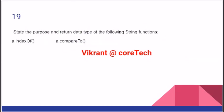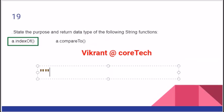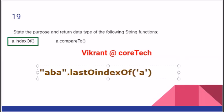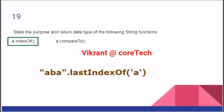Purpose and return type: indexOf returns the index of the character passed as an argument. So if I write 'aba'.indexOf('a'), this will be 0. If I write lastIndexOf, in this case the answer will be 2. Let us see compareTo — compareTo compares the words in dictionary order and returns an answer in the form of an integer.